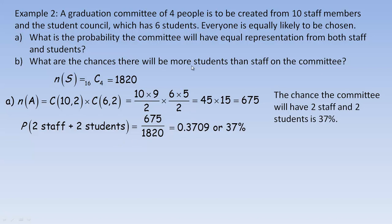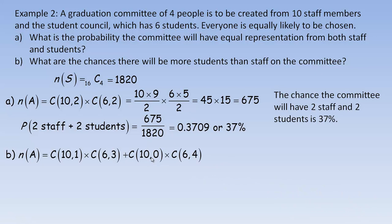Part B asks what are the chances there will be more students than staff on the committee. More students than staff means either 3 students or 4 students. Three students would mean 3 students and 1 staff — since there must be 4 people total. So there would be 10 choose 1 ways of selecting the 1 staff member, times 6 choose 3 ways of picking the 3 students. Plus, it could also be all 4 students, meaning 10 choose 0 staff and 6 choose 4 students.